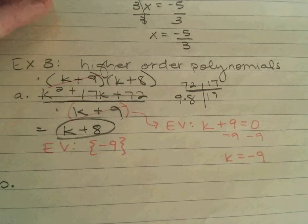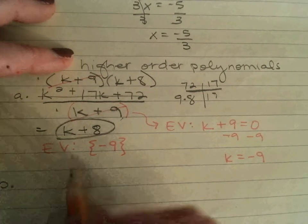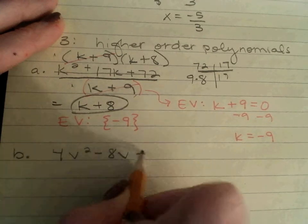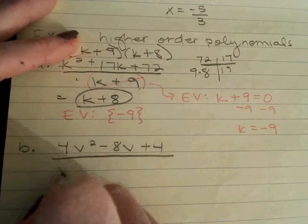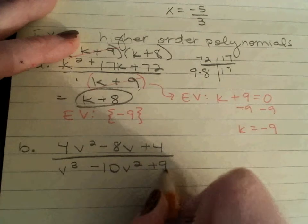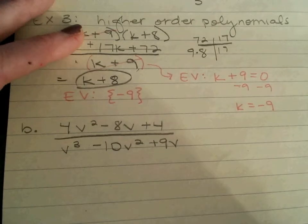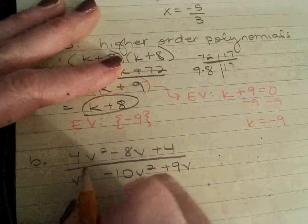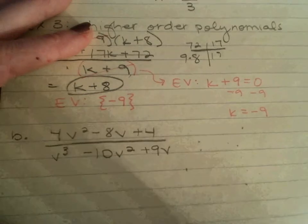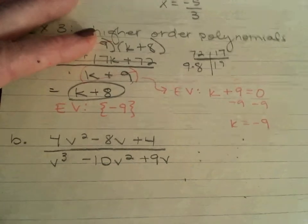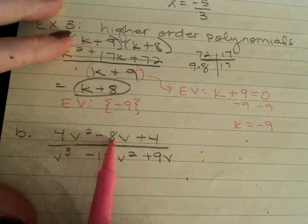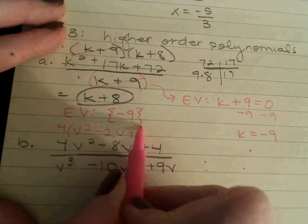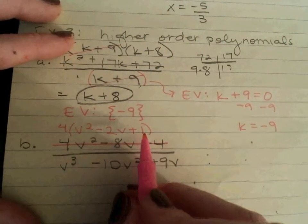Last one. Last one. So, 4v squared minus 8v plus 4 over v cubed minus 10v squared plus 9v. That's a 3, yes. Step one. Factor everything, right? So, in the numerator, I notice that there's a 4. They all have a 4 in common, so I'm going to first factor out the 4, leaving with v squared minus 2v plus 1. But, I have a trinomial, so I can factor that further.